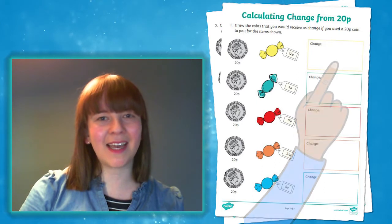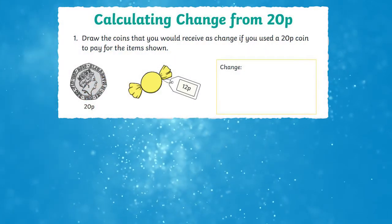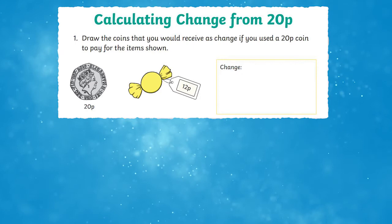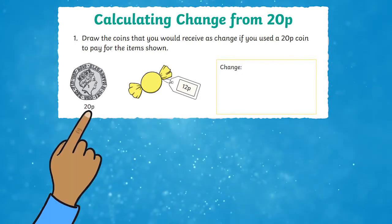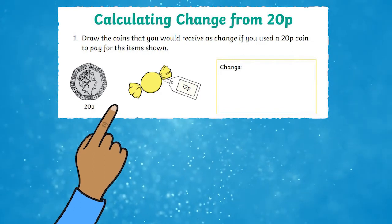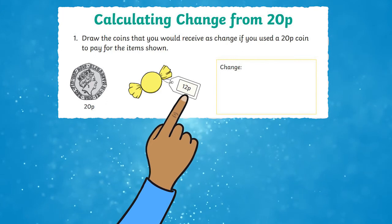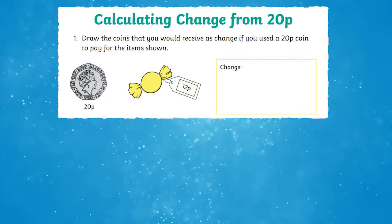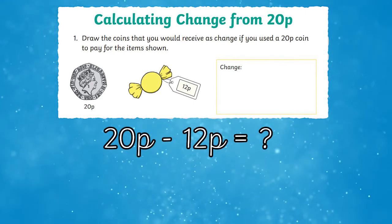Let's take a look at the steps children need to take in order to find their answer. Firstly, children need to recognise what the number sentence is, or the process behind finding the correct change. So let's start with the 20 pence coin — we're taking away or subtracting the cost of the sweet. In this example it's 12 pence, so we can write 20 pence subtract 12 pence. This is the problem that we're trying to solve.